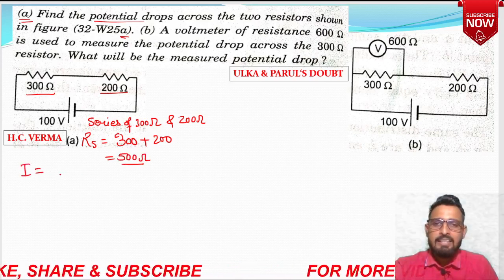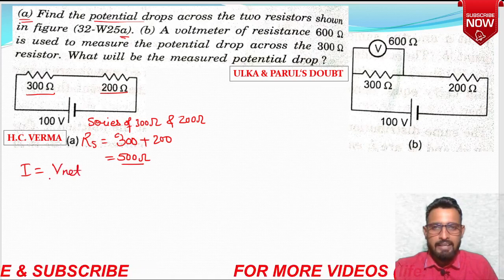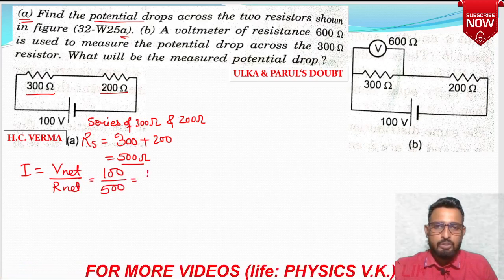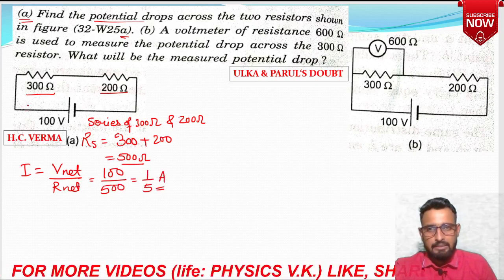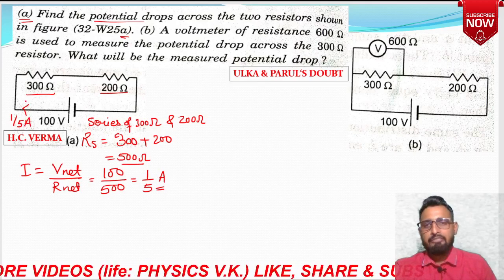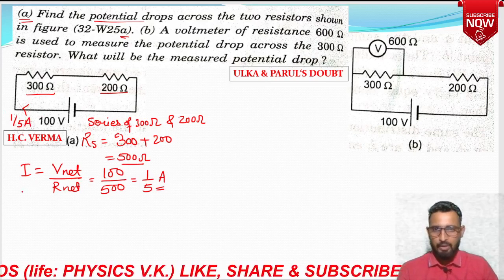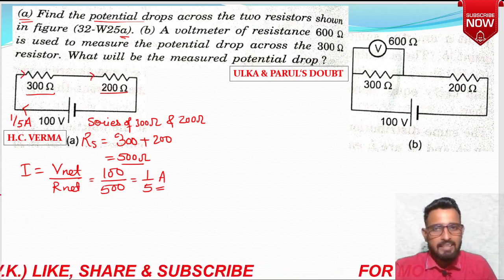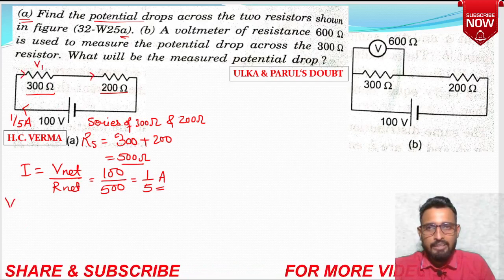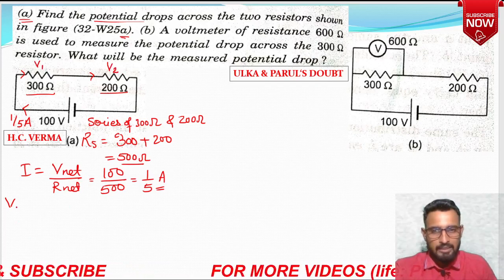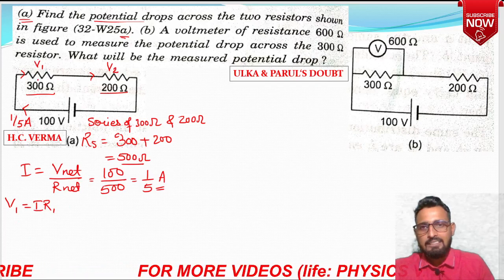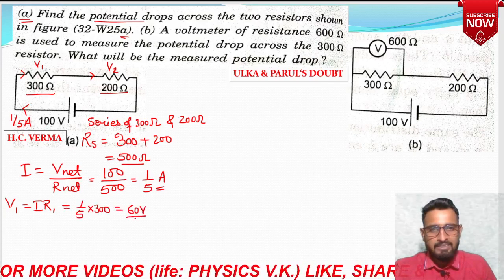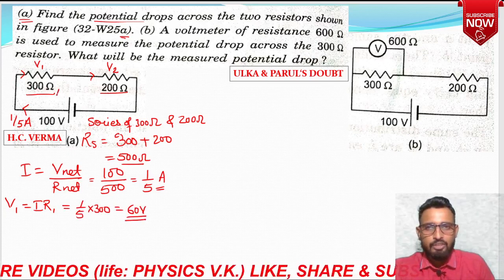Our net resistance is 500 ohm. So what would be the current through the circuit? Current equals net voltage divided by net resistance. The net potential is 100 volt, net resistance is 500. So the current through the circuit is 1/5 ampere, which is 0.2 ampere. This current flows through both 300 as well as 200, because both are in series. Let's name the voltage across 300 as V1, and voltage across 200 as V2.